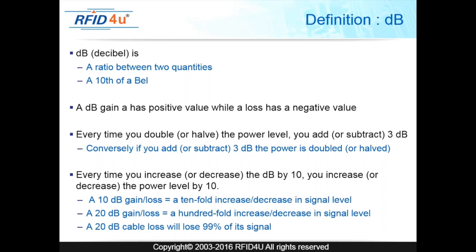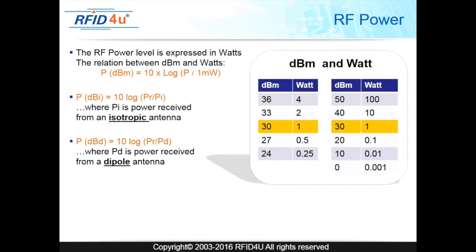A 10 dB gain or loss equals a tenfold increase or decrease in signal level. A 20 dB gain or loss equals a hundredfold increase or decrease, so a 20 dB cable loss would lose 99% of its signal. We've created charts for reference: 30 dB equals 1 watt. If you increase by 3 dB to 33, you double the wattage. Increase by another 3 to 36, you double again. Subtract 3 dB and you halve the power.